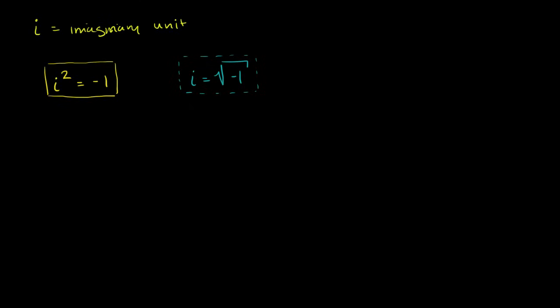So I could start with i to the 0th power. And so you might say, hey, anything to the 0th power is 1, so i to the 0th power is 1, and that is true. You could actually derive that even from this definition, but this is pretty straightforward. Anything to the 0th power, including i, is 1.